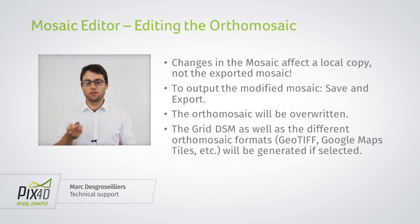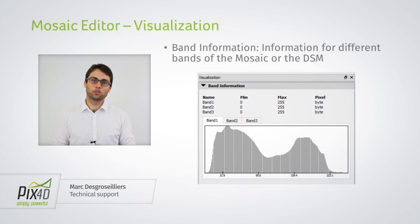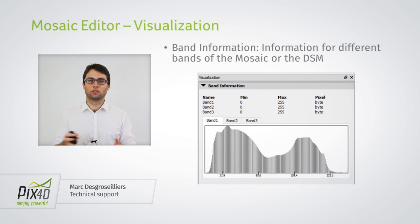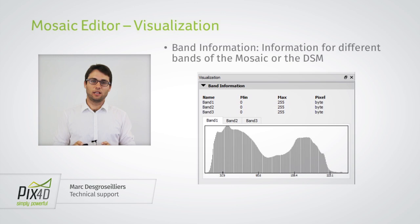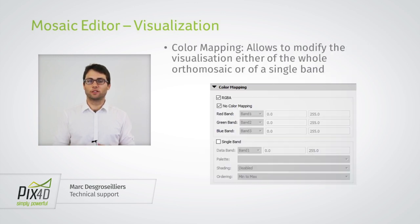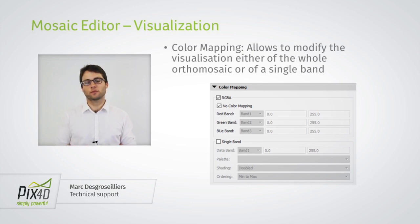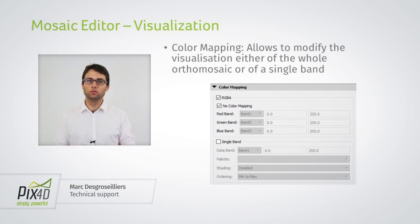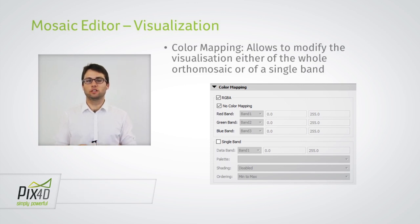In the orthomosaic editor, there's also a visualization option. This will give you information about the pixel distribution — the distribution of pixel values — and it will also allow you to analyze this information either for the whole orthomosaic or just for a single band. Let's now go inside the mapper and see how to add a region and select images for the planar or ortho projection.